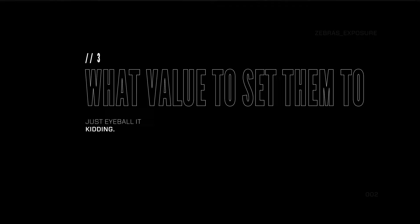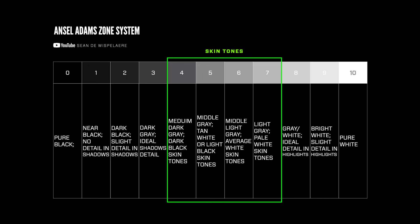Now the big one: what do we even set the zebra values to? This is probably one of the most important aspects of this entire video — if you don't know what to set them to, you're going to have a hard time getting proper exposure. For photography it's pretty easy: go back to the chart, and whatever your subject is — say a skin tone you want at 60% — just expose that skin tone to 60% and take the shot. This works whether you're shooting JPEG or RAW, though RAW gives you more flexibility in post if you miss exposure slightly.